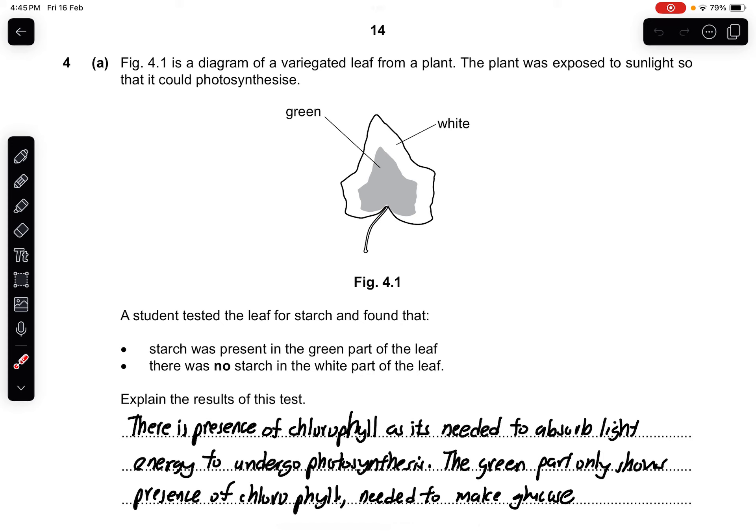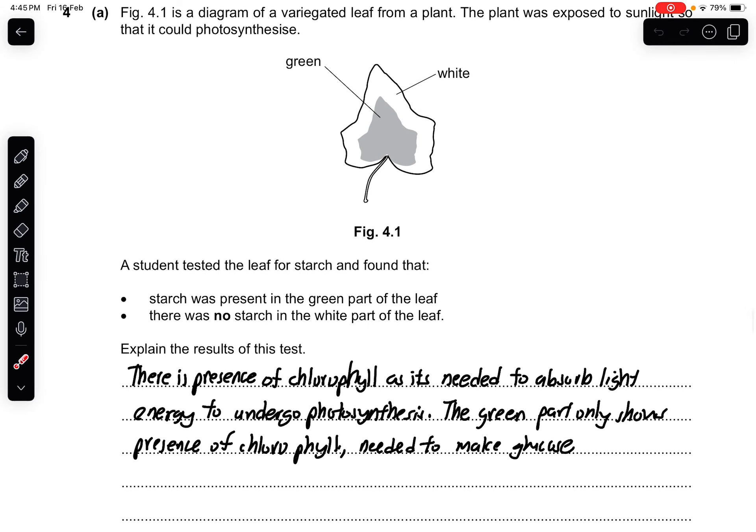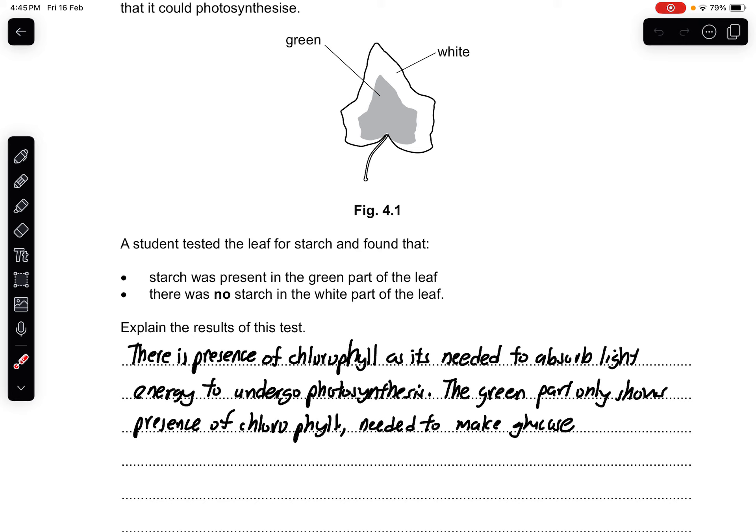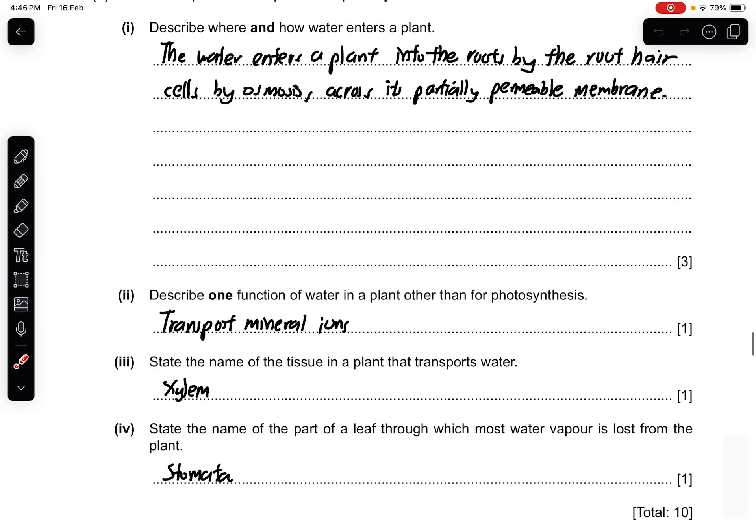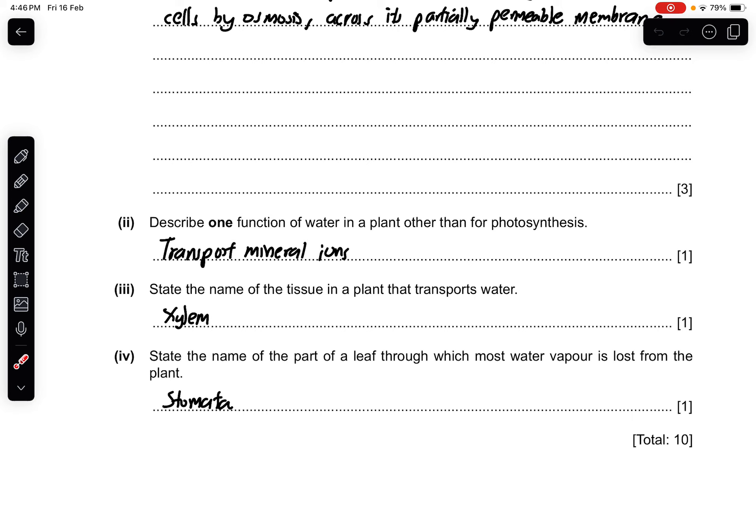Question 4A: Figure 4.1 is a diagram of a variegated leaf from a plant. The plant was exposed to sunlight so it could photosynthesize. A student tested the leaf for starch and found that starch was present in the green part but not in the white part. Explain this result: chlorophyll is needed to absorb light and to undergo photosynthesis. The green part shows the presence of chlorophyll, the white part doesn't, so chlorophyll is required to make glucose. Part B: Water is required for photosynthesis. Describe where and how water enters a plant: water enters the plant into the roots by the root hair cells by osmosis across the partially permeable membrane. Describe one function of water in the plant other than photosynthesis: transporting mineral ions. State the name of the tissue that transports water: xylem. State the part of a leaf through which most water vapor is lost: the stomata.